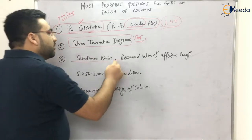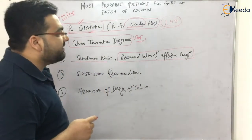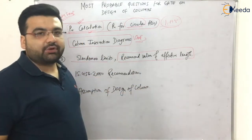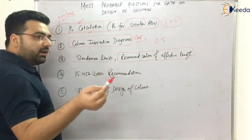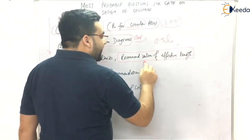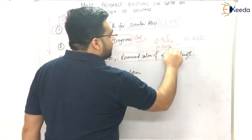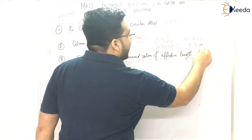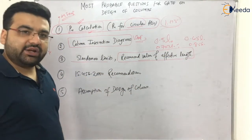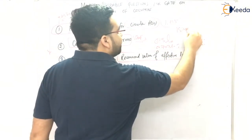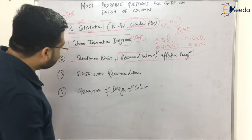Next are the slenderness limits — whether the column is restrained from both ends or free from one end — and the recommended values of effective length as per IS 456:2000. Do not mix these with Euler's theoretical values. For example, the theoretical value gives 0.5L, but the IS 456 recommended value is 0.65L. Similarly, where theory gives 0.707L, IS 456 gives 0.85L. If the question mentions IS 456:2000, use the recommended values, not Euler's theoretical values.